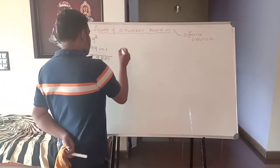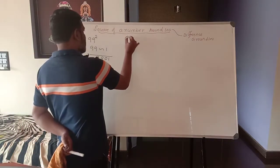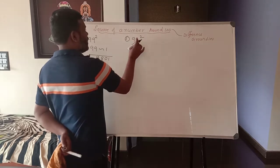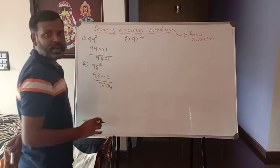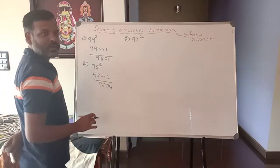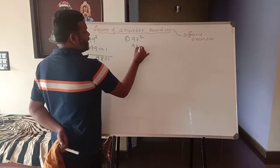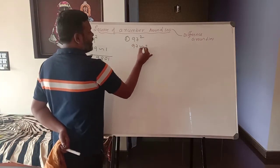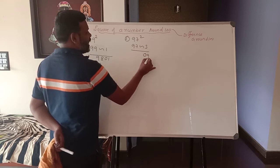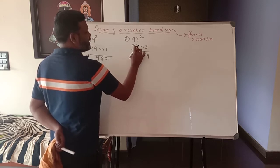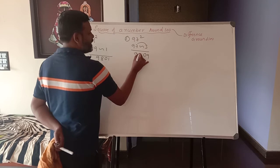Now the third example: 97 squared. 97 is also near to 100. The difference is 3. Now 3 squared is 09. 97 minus 3 is 94. So the answer is 9409.